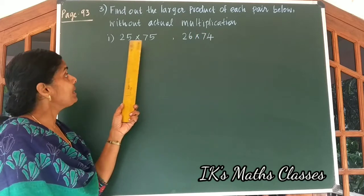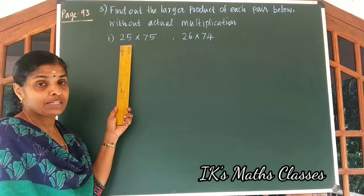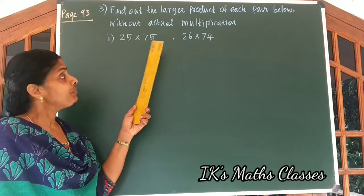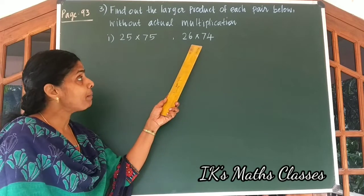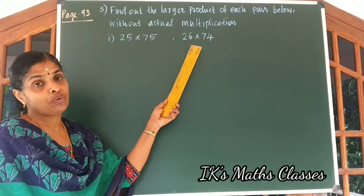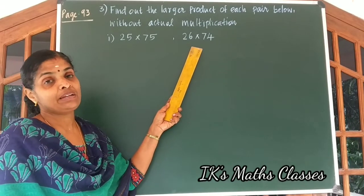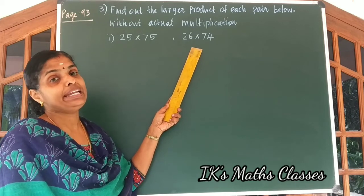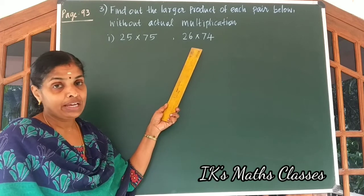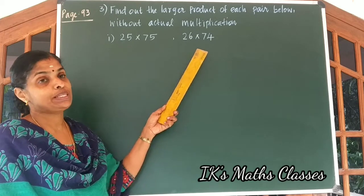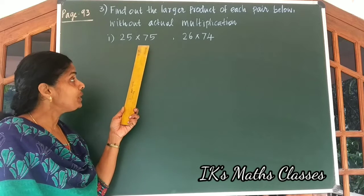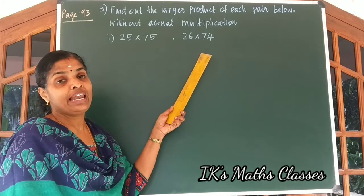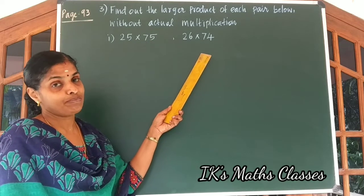We are discussing the first question. We have to find out the larger pair out of these two. We are going to use the suitable identity to find out the larger pair.